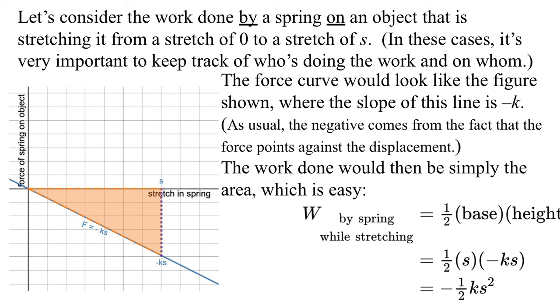The base is side s. And the height is the value of the force at that moment. But that's minus ks. And so the work done is minus 1 half k times s squared. And that kind of thing is going to pop up a lot. Spring works, and energies, look like a half ks squared always. At least for simple springs. So we have something like that.